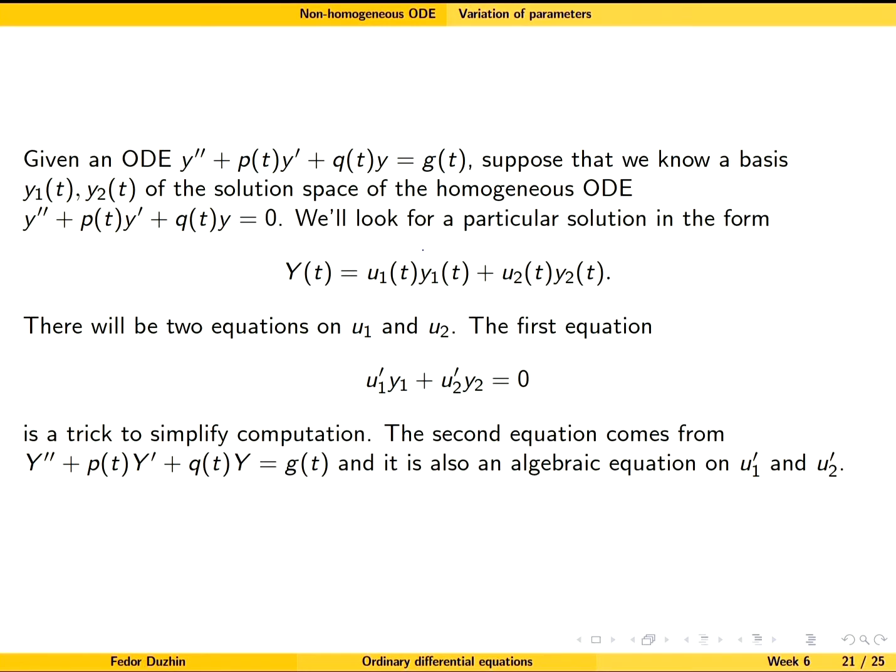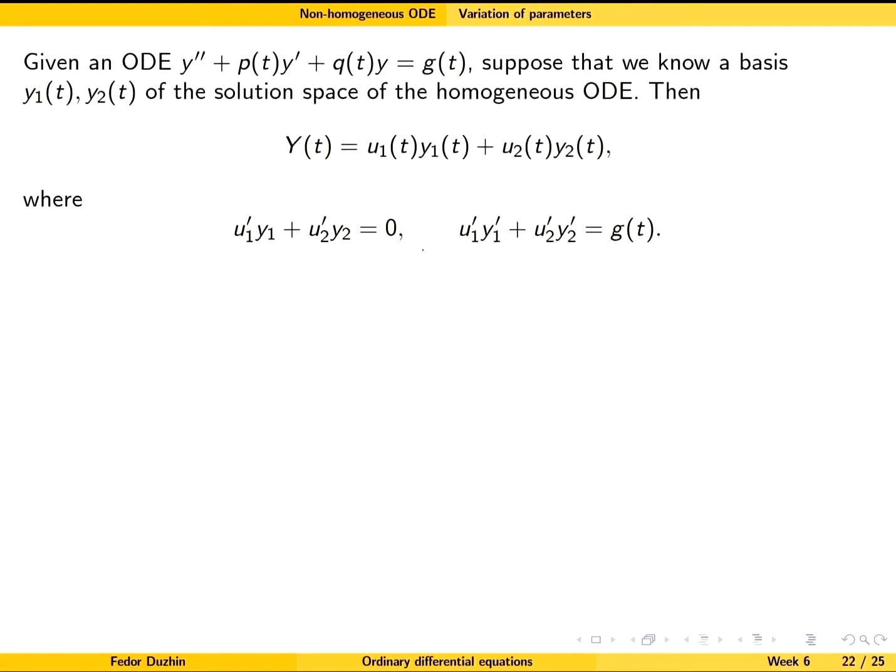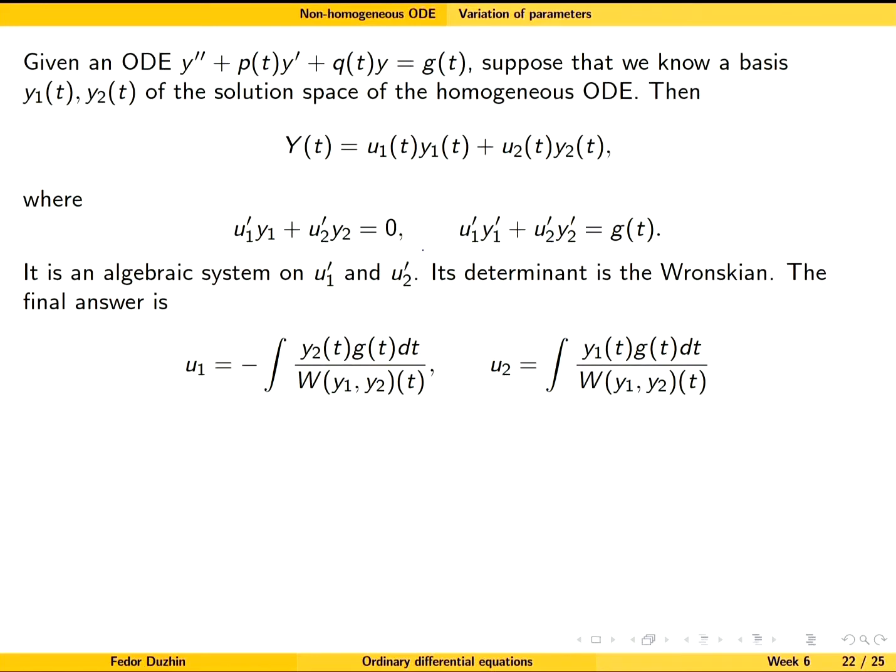After all simplifications, we got just algebraic equations in u₁' and u₂'. The determinant of the system is exactly the Wronskian, and then we can apply Cramer's rule to find the final answer.